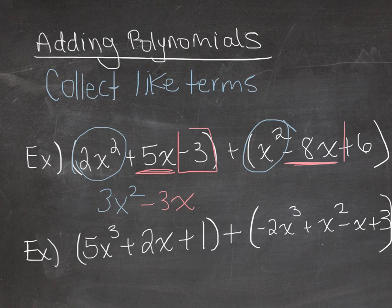And then I have negative 3 and a positive 6. So the two constants you can bring together. So a negative 3 plus 6 would be positive 3. So that's what the sum of those two polynomials is equal to.